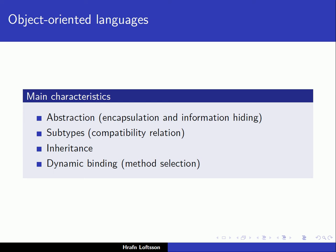The third point is inheritance, which we have also talked about. One of the problems with abstract data types is that they do not allow inheritance. And the fourth point, which was also a problem with abstract data types, is dynamic binding — dynamic method selection — selecting the method to be executed dynamically versus selecting it statically. So there are four items: abstraction, subtypes, inheritance, and dynamic binding.